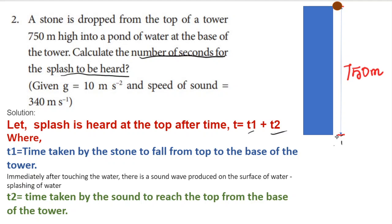The total time for the splash to be heard is calculated by adding two time durations. T1 is the time taken by the stone to fall from the top to the base of the water. T2 is the time taken by the sound to reach the top from the base of the water.